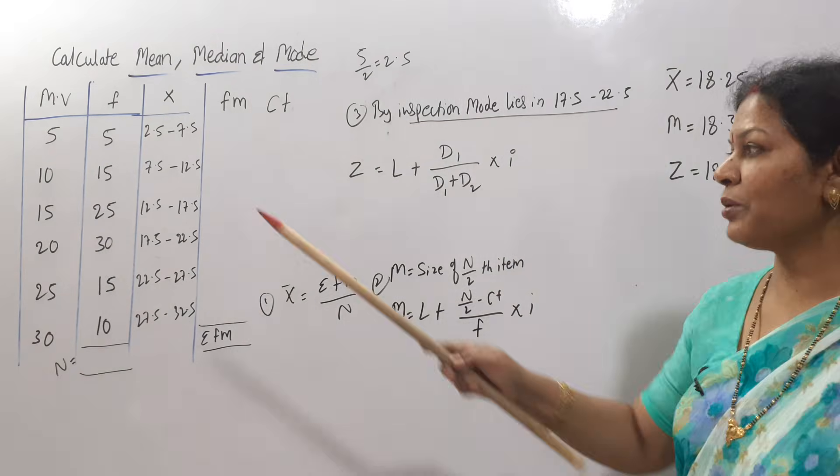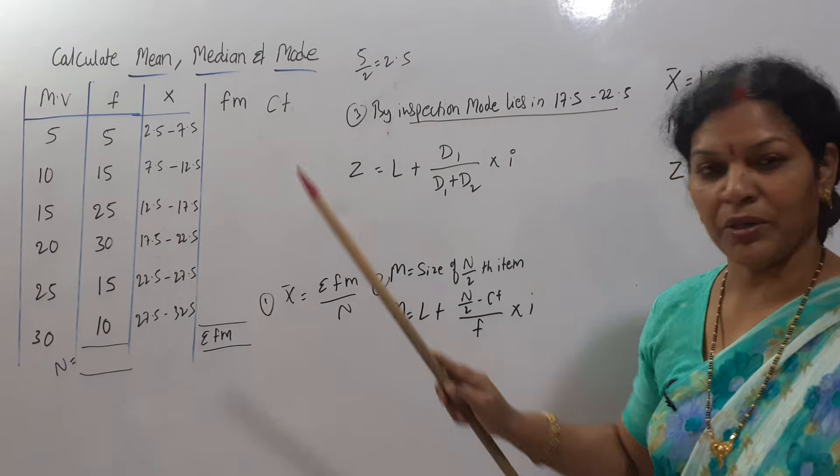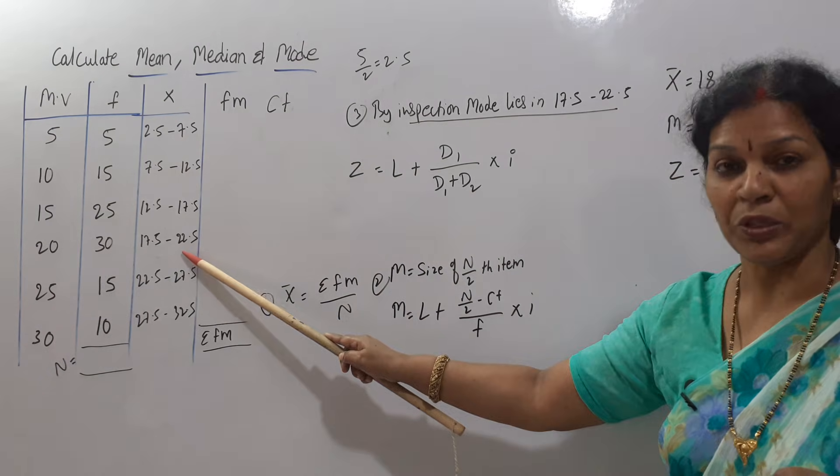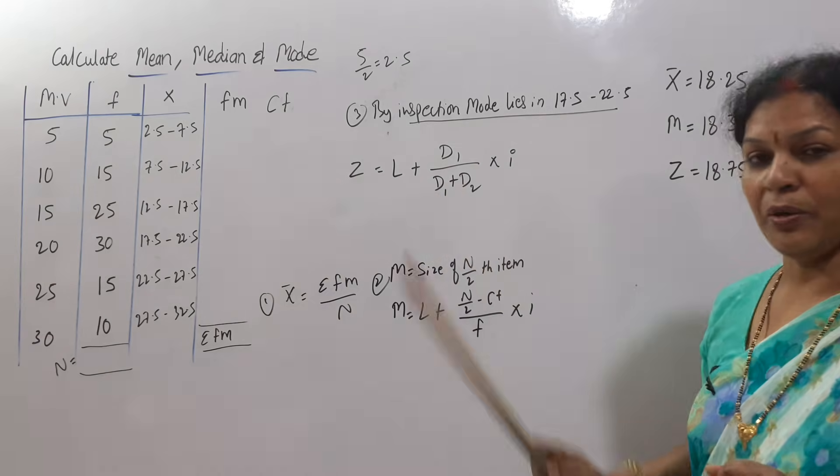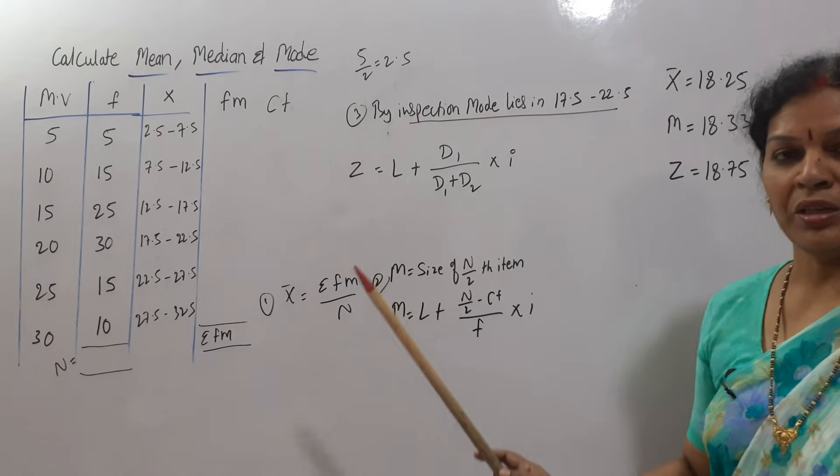And third one is that mode. We need for mode, you can go simply by inspection. Mode lies in 17.5 to 22.5. Write the formula: L plus d1 by d1 plus d2 into i. According to that prepare it.